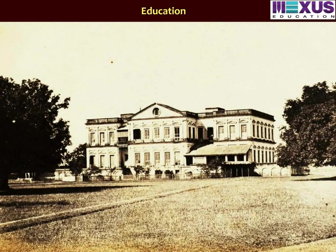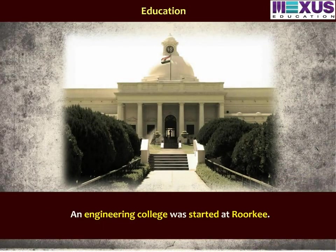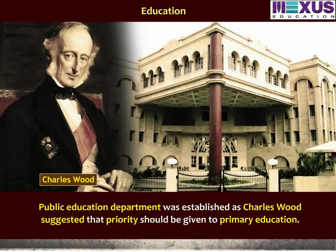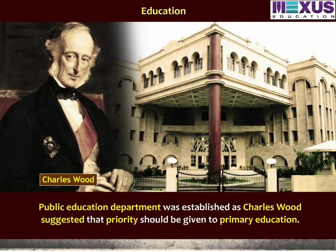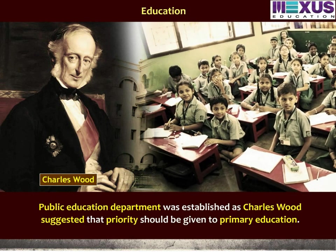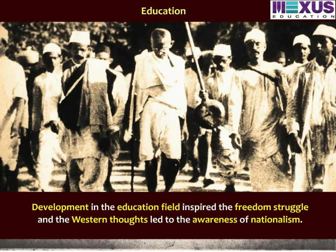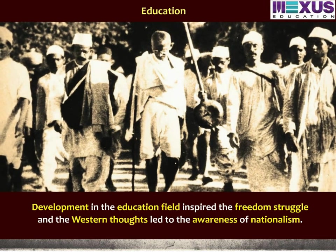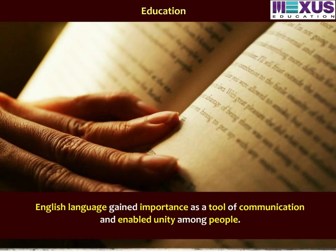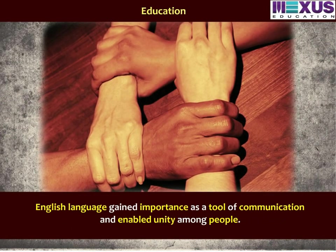Various universities came up at Calcutta, Madras, and Bombay. An engineering college was started at Roorkee. The public education department was established as Charles Wood suggested that priority should be given to primary education. Development in the education field inspired the freedom struggle, and Western thoughts led to the awareness of nationalism. English language gained importance as a tool of communication and enabled unity among the people.